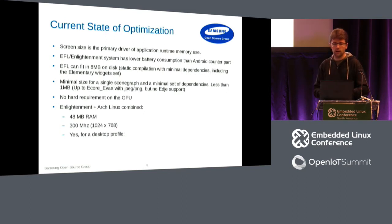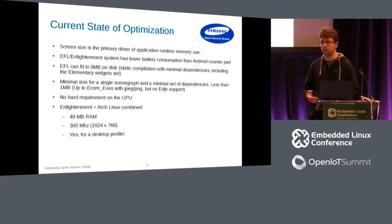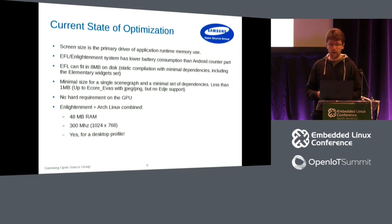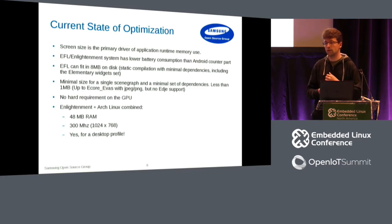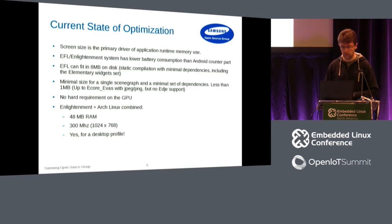The current state of optimization in EFL is mostly driven by screen size and your theme. The bigger your screen, the more pixmaps and resources you need, and the more memory you need. We are currently doing better than Android — that's why Samsung is using Tizen on smartwatches. We have better battery life than if we were using Android Wear, which is a side effect of EFL and Enlightenment being more energy efficient for doing the same task.